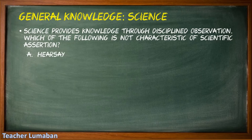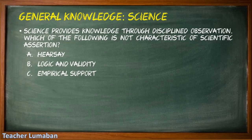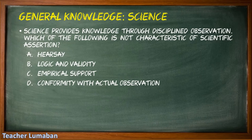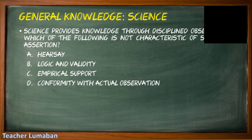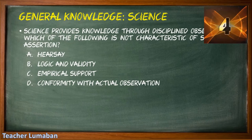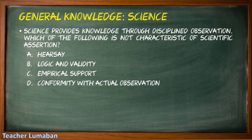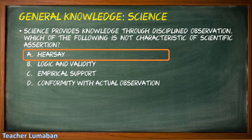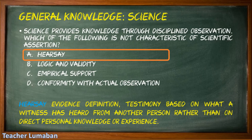Science provides knowledge through disciplined observation. Which of the following is NOT a characteristic of scientific assertion? Letter A: hearsay, Letter B: logic and validity, Letter C: empirical support, Letter D: conformity with actual observation. The correct answer is Letter A: hearsay. Hearsay is not characteristic of scientific assertion. Hearsay evidence is testimony based on what a witness has heard from another person rather than on direct personal knowledge or experience.